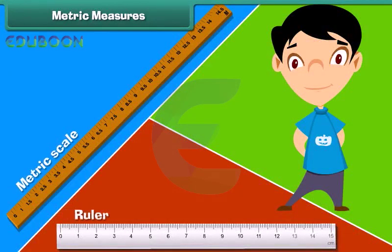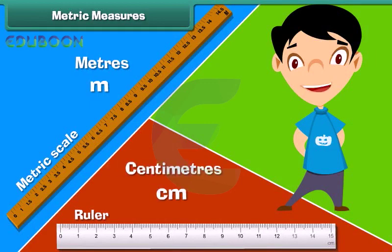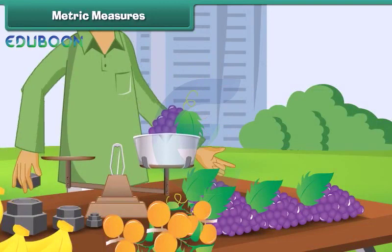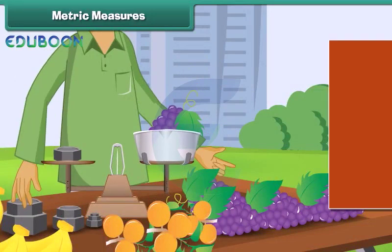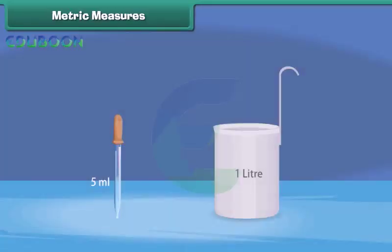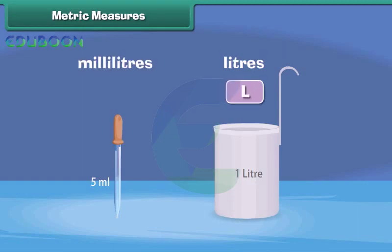Metric measures. Meter is represented by M and centimeter by CM. The weight of an object is measured in grams and kilograms. The symbol KG represents kilogram while the symbol G represents gram. Capacity is measured in liters and milliliters. L represents liter and ML represents milliliters.